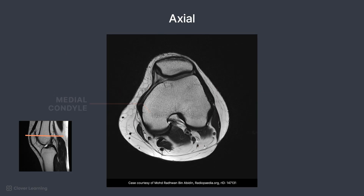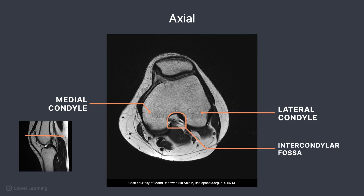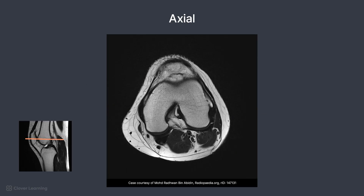Here, the medial condyle, lateral condyle, and intercondylar fossa can be seen, along with the medial retinaculum. Anteriorly, the patellar ligament is demonstrated as a dark structure. Remember, ligaments and tendons appear dark on MRI images.